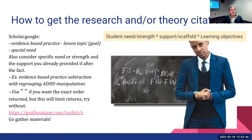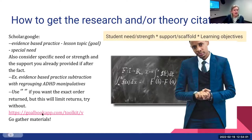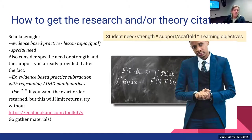An example search would be: 'evidence-based practices, subtraction with regrouping, ADHD, manipulatives.' You can use quotes around terms if you want exact word order returned, but this limits your results, so try with and without. Another option is a short-term trial membership to the Goalbook app — that site is amazing at providing differentiated lessons and everything detailing down to what you need.